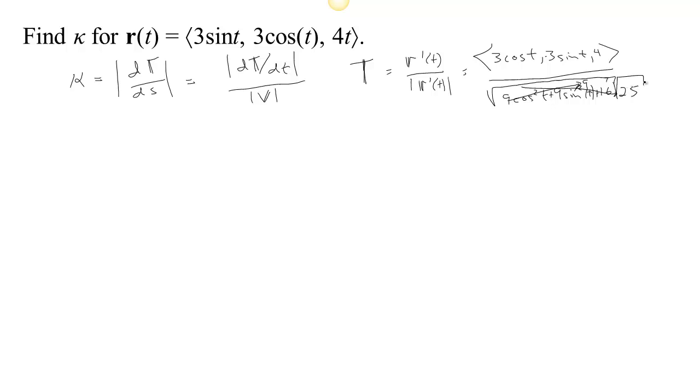So we're really talking about the square root of 25 down here. So our unit tangent is equal to ⟨3/5 cos t, -3/5 sin t, 4/5⟩.